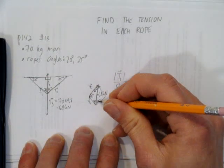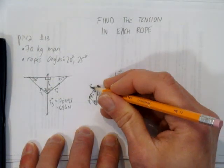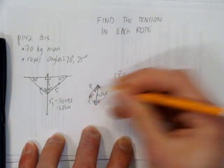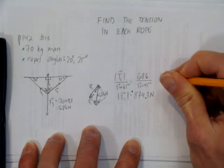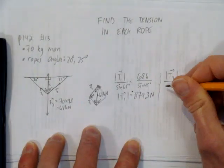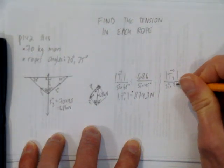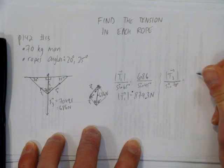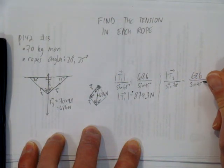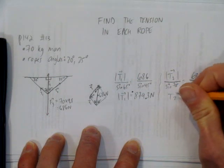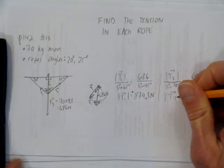So I'll look at my diagram again. I have the second tension vector here. That's T2. And I'll look for its magnitude by dividing T2 over the sine of its angle. Equals, again, 686 over the sine of its angle.